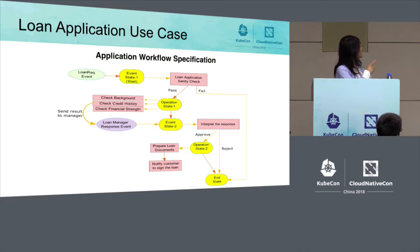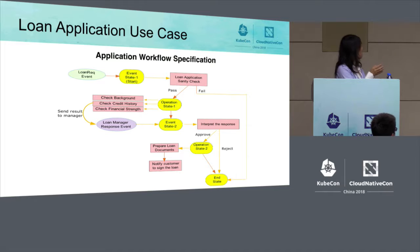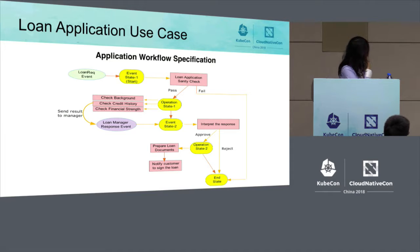The first function does a background check to make sure the applicant has no criminal record. The second does a credit history check to ensure a good credit score. The third checks financial strength to verify sufficient income for the loan. Those functions send their results to the manager.